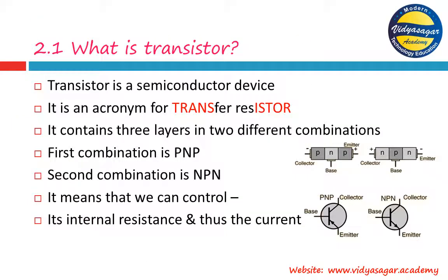In natural course, it is customary that we have to see what a transistor is first. Transistor is a semiconductor device. It is an acronym for transfer resistor — transfer and resistor. Transistor contains three layers in two different combinations. The first combination is PNP, meaning the N layer is sandwiched between two P layers. The second combination is NPN, meaning one P layer is sandwiched between two N layers. Transistor means a device which can control the internal resistance and thus the current.